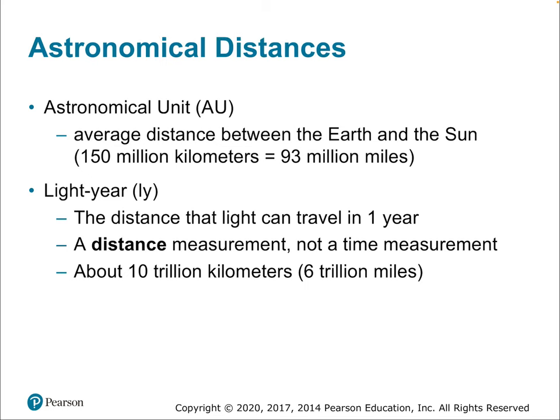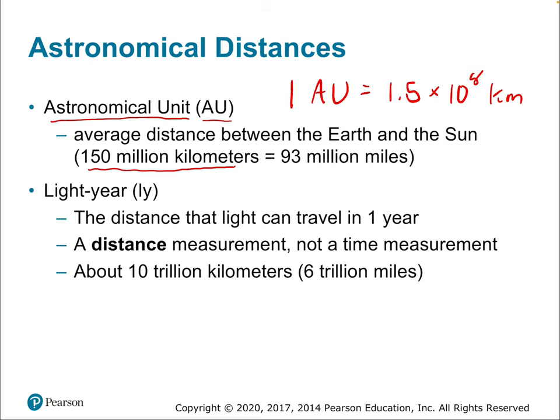Now let's look at astronomical distances. The astronomical unit, or AU, is the average distance between Earth and the Sun — a very human-centric measurement useful for comparing planetary distances. One AU equals 150 million kilometers, or 1.5 × 10⁸ kilometers, which is also 93 million miles. We will use the metric system throughout these lectures.